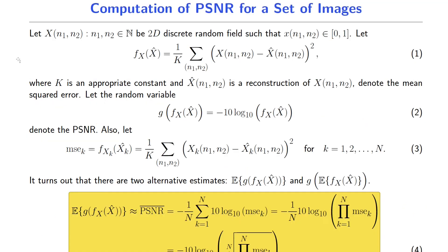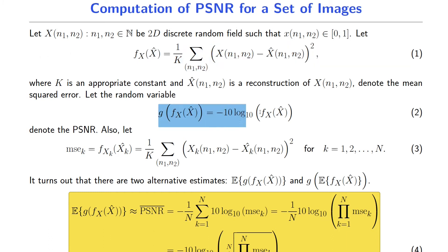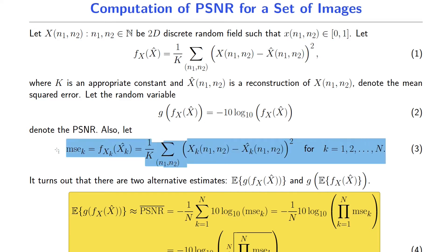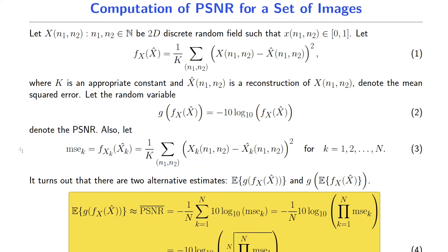First, let's look at the PSNR computation. Let's define MSE as in equation 1 and PSNR as in equation 2. Please note that since the signal is in the 0–1 range, we can write the PSNR definition without any denominator. Also, let us define a variable MSE_k, which is the MSE of the k-th sample. With those definitions, it turns out that there are two alternative estimates: the expectation of PSNR values, and the PSNR coming from the expected value of the MSE values.